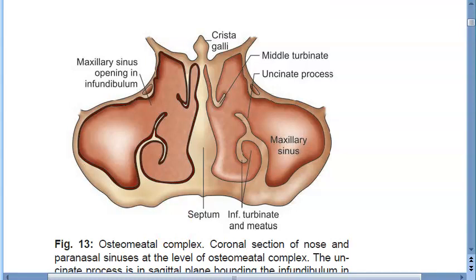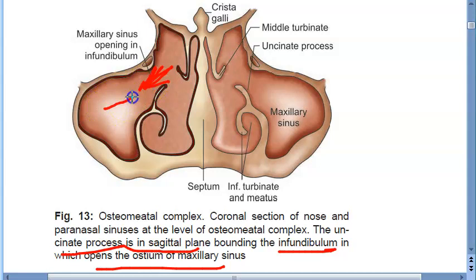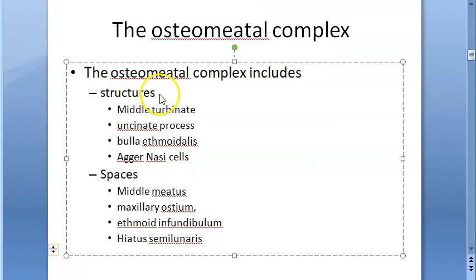This is the coronal section. The uncinate process is in the sagittal plane, bounding the infundibulum in which opens the ostium of the maxillary sinus. So into the infundibulum the maxillary sinus is draining. So the terms you have here: maxillary sinus, middle turbinate, below that the middle meatus, the uncinate process, and the infundibulum. The osteomeatal complex consists of some structures and some spaces.